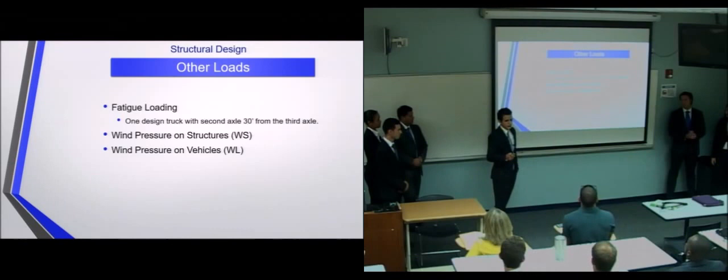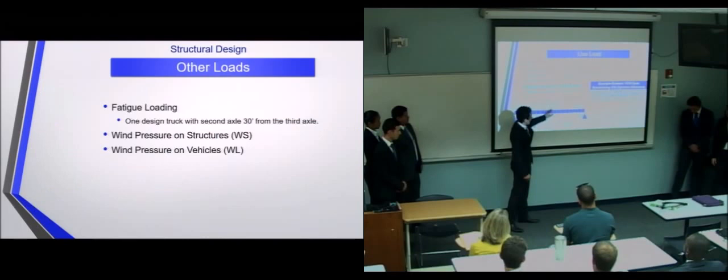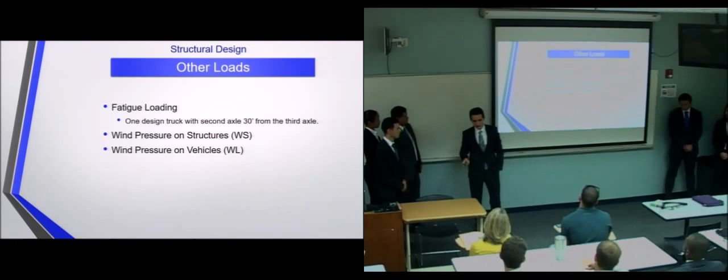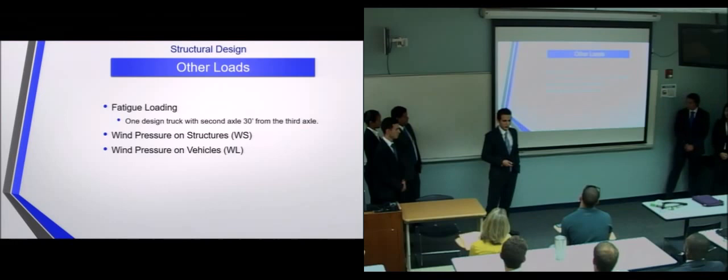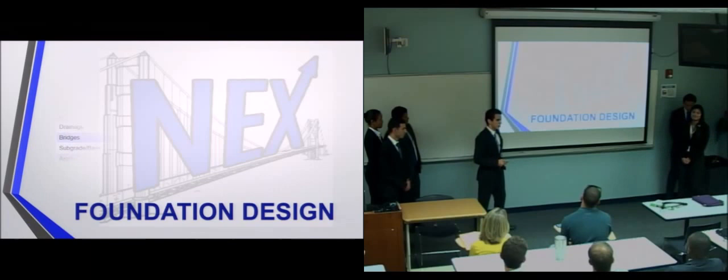And lastly, these are just some other loads that we're going to consider. The fatigue loading, which is controlled by one design truck with the second axle. One thing I forgot to mention, for the previous calculation, the spacing between the second and the third axle has to be 14 feet. But for the fatigue loading, it's going to be fixed at 30 feet. We're also going to consider the wind pressures on the structures. There's actually two wind loads: wind pressures on the structures and wind pressures on the live load. The wind pressure on the structures, the basic wind speed that we're going to use is 150 miles per hour. That's standard for Miami-Dade County. And the wind pressure on the vehicles, it's a uniform distributed load that is transverse to the motion of the vehicles.